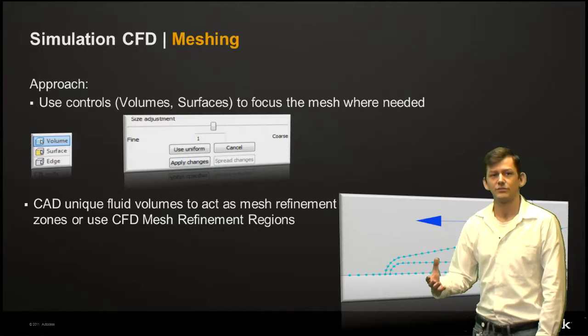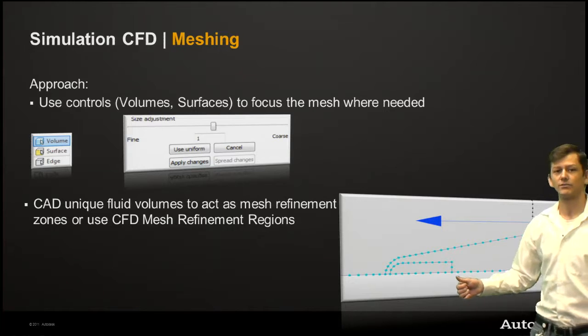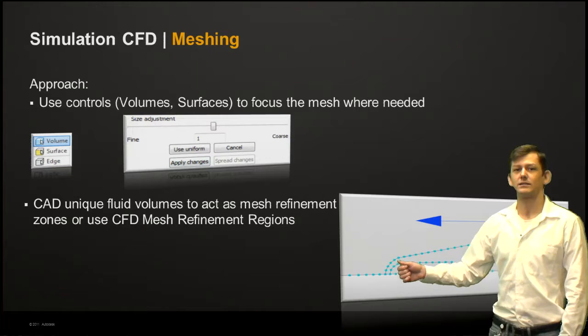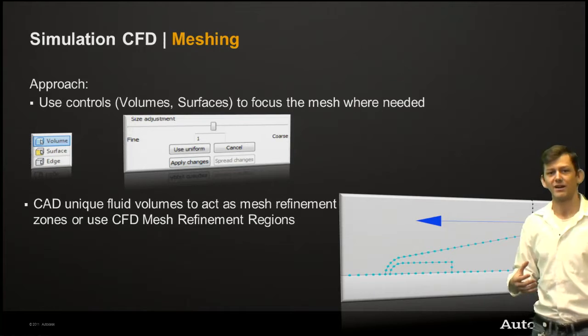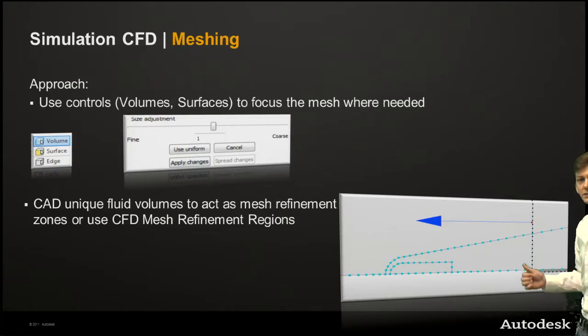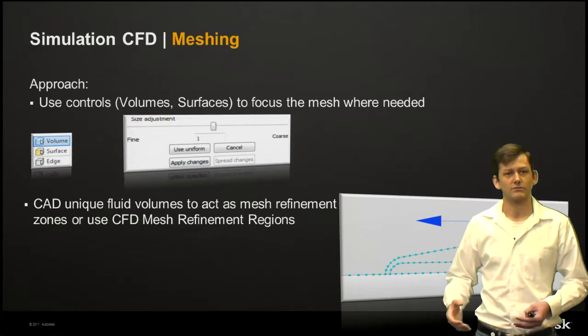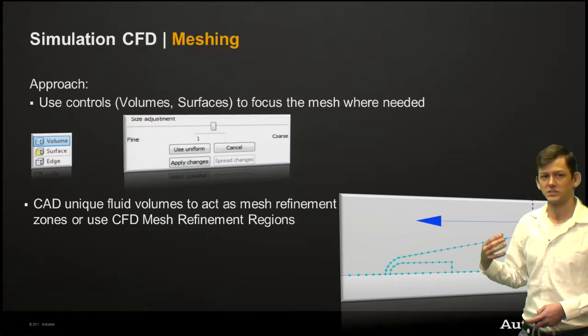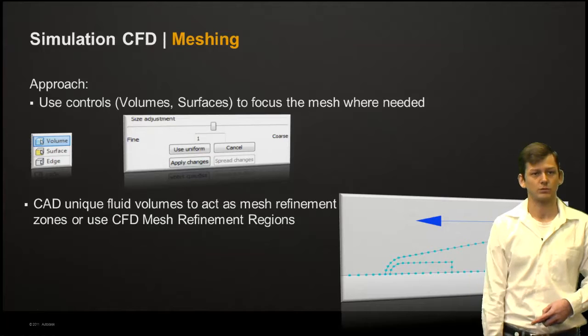At the same time, feel free to leverage CAD volumes. Here you can see that we have a flow obstruction in 2D. We actually have an extra CAD generated volume here to help concentrate elements, use that as a refinement region. You can even use CFD mesh refinement regions, which is what you see here with the black dots right at the end here. Feel free to take any combination of manually selecting entities to refine, CAD regions, and CFD mesh refinement regions to be able to get the mesh that will capture the end results.